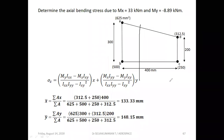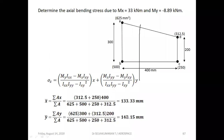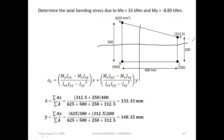For y-bar: sigma(ay) / sigma(a), again B is the reference. Area 625 × 300 + 312.5 × 200, divided by the sum of all the areas. So y-bar is 148.15 mm above B.